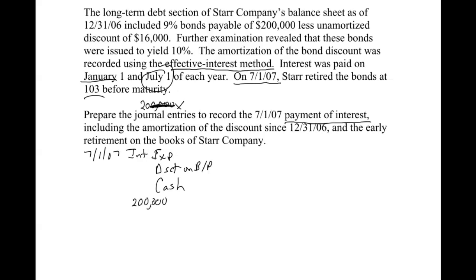The interest payment is $200,000 × 9% × 6/12 because interest is paid semi-annually. That works out to be $9,000. If you go back to our amortization tables, this was column A — I always had the headers A, B, and C for the journal entry. So we know that $9,000 is our cash number in the journal entry.